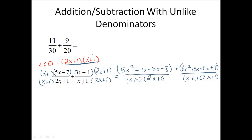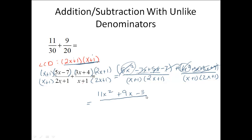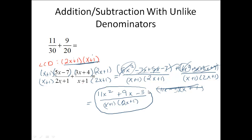The reason I multiply out my numerators is because I need to actually add them and figure out what my like terms are. So combining: 5x squared plus 6x squared gives 11x squared; negative 7x plus 5x gives negative 2x... plus 3x plus 8x gives 9x; then minus 7 plus 4 gives minus 3. The bottom stays as x plus 1 times 2x plus 1. I still need to check if I can factor the numerator — it didn't factor, so this is the final answer.